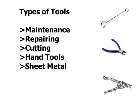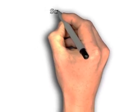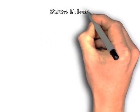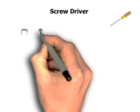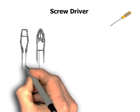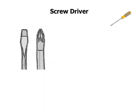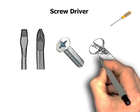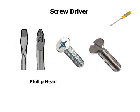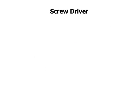Screwdrivers. Screwdrivers can be classified on the basis of length or shape. However, the purpose of a screwdriver is the same: loosening or tightening of screws. On the basis of head shape, screwdrivers are classified into Phillips head and flat head. They are also classified on the basis of handle length, like short handle and long handle screwdrivers.